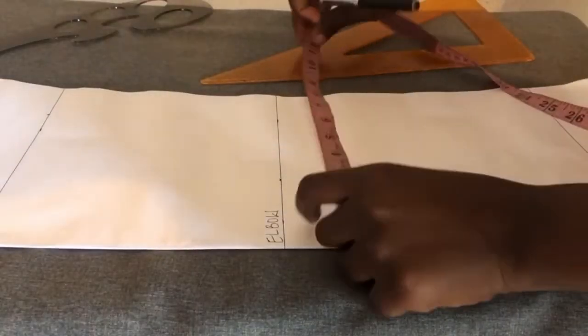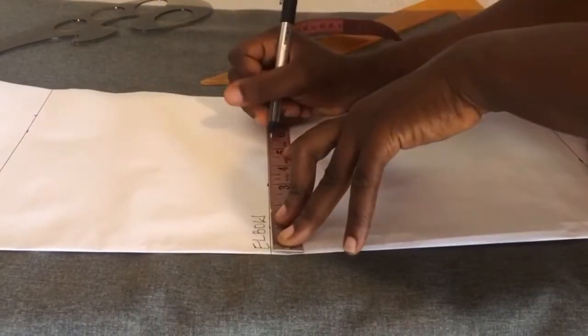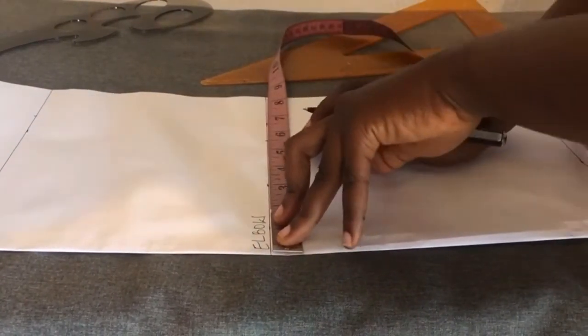The circumference of my elbow is 11 inches, so divided by 2, I'll be at 5.5 inches. I'll mark that.